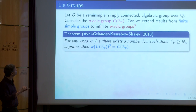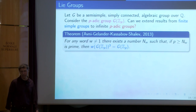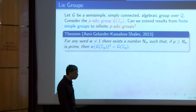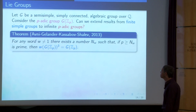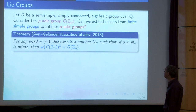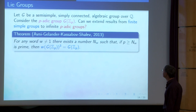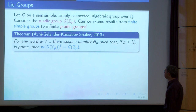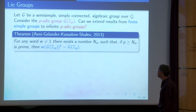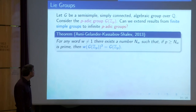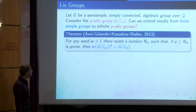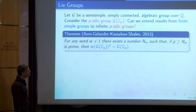Let me move quickly to infinite groups. Until now we discussed finite simple groups. Now I want to say something about infinite groups — all kinds of Lie groups. First, consider p-adic groups. If you take a semi-simple p-adic group G(Z_p), then with Nir Avni, Tzachik Gelander, and Martin Kassabov, we proved that w of the p-adic group cubed is the whole p-adic group.